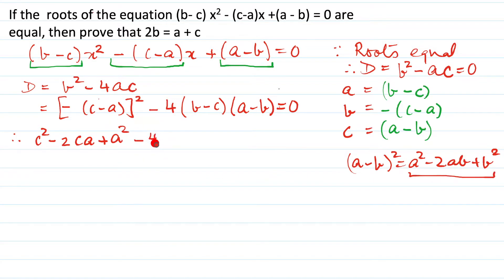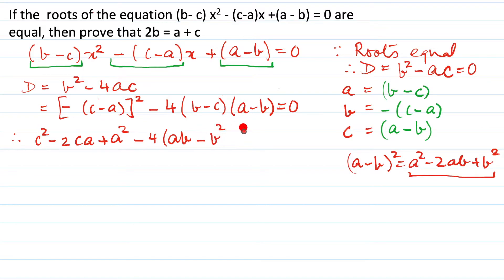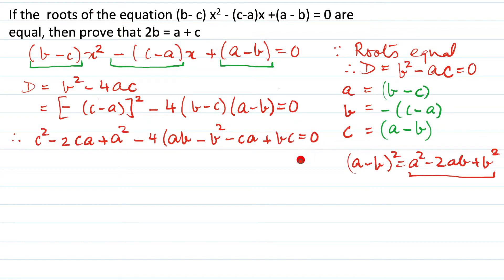Now minus 4 into the bracket: we multiply out to get ab, then minus b squared, then minus ca, then plus b squared. Wait — collecting: we get ab, minus bc, minus ca, plus b squared. And that's equal to 0. We close the bracket here.